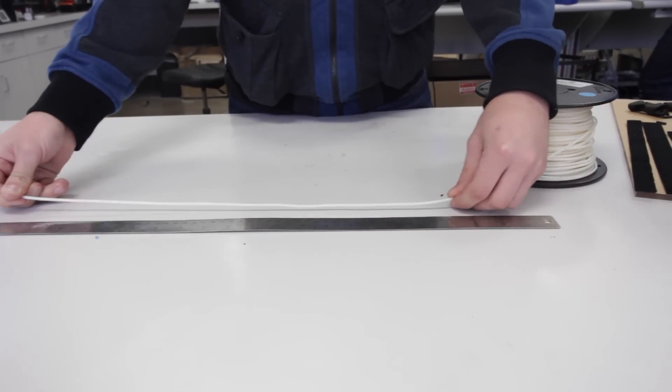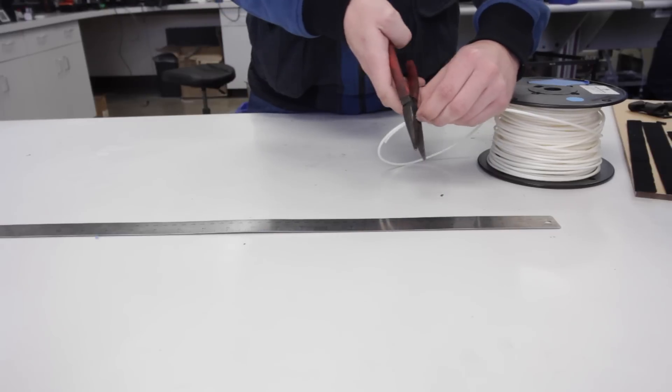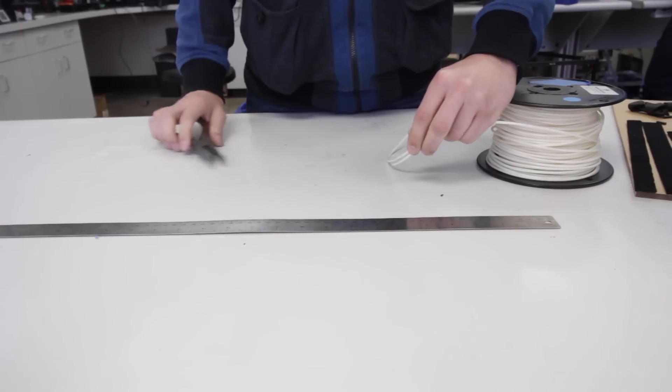For ABS juice, take your spool of 3mm ABS filament and measure out 50cm of it, or measure 5 grams of scrap ABS prints.